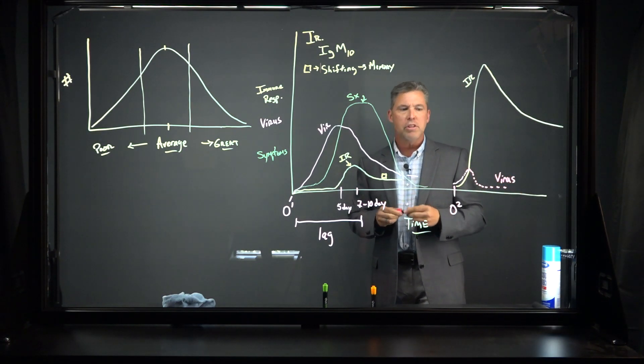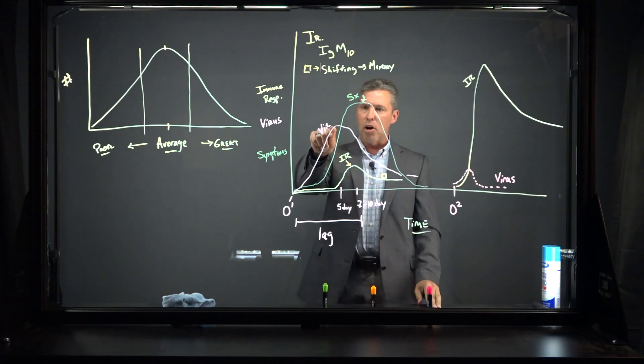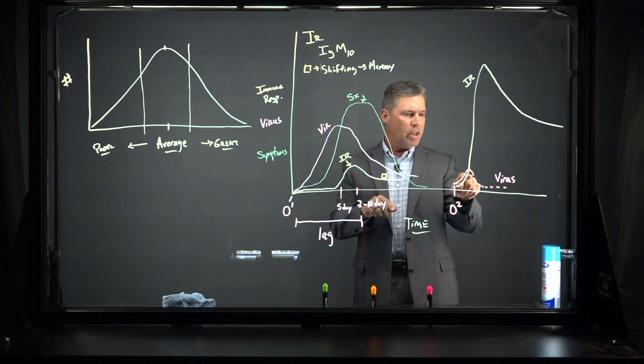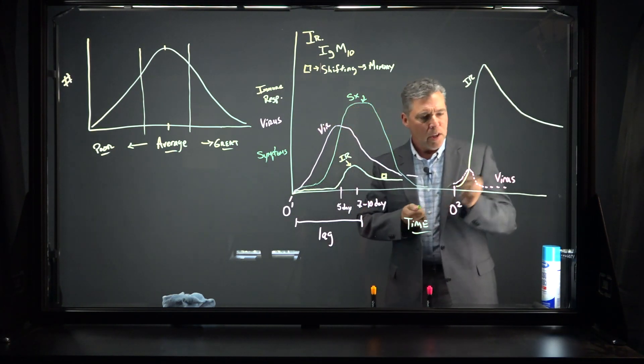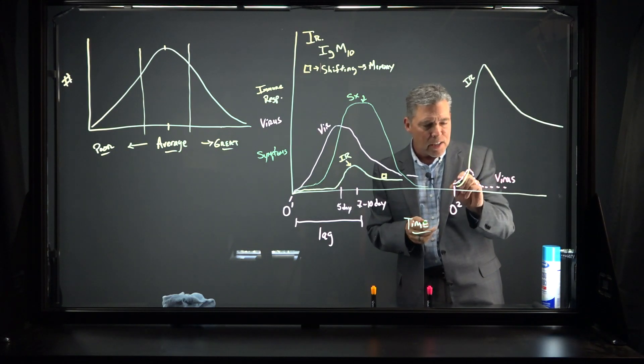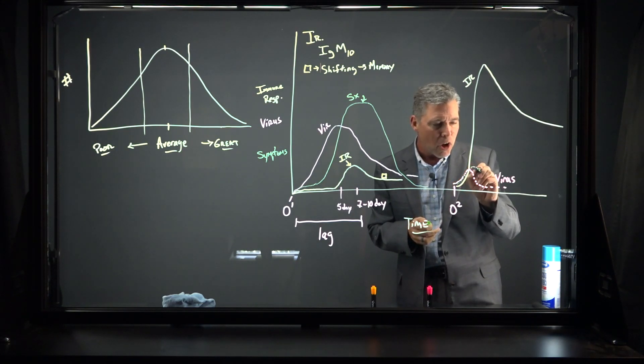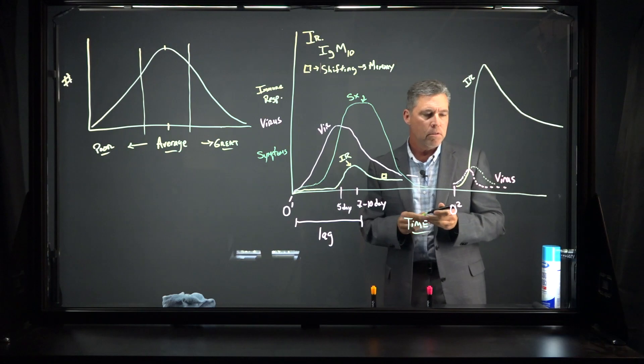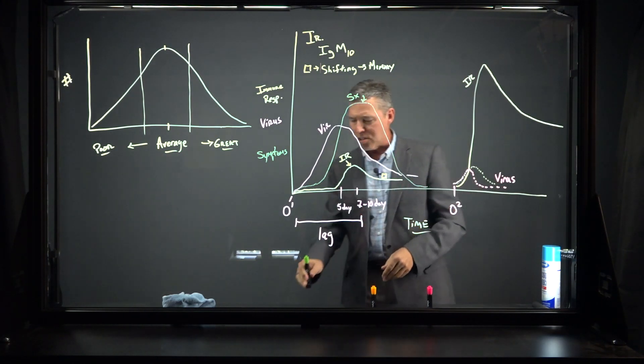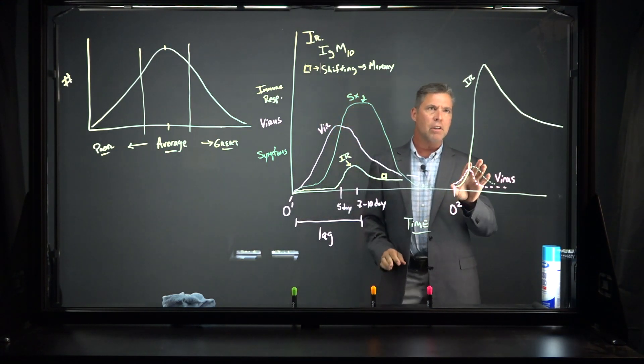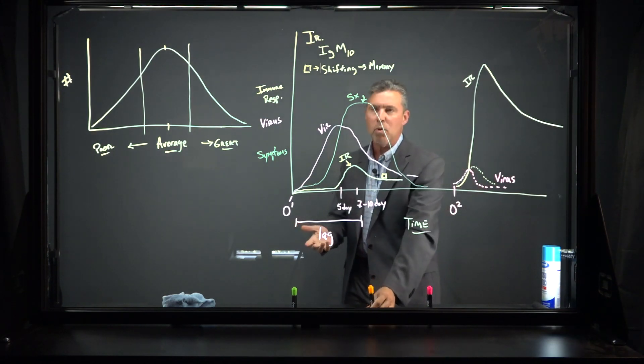Correspondingly, the viral load goes like this. This is virus. Notice the difference. Here, you've got a large viral load in symptoms. Here, you have very little viral load. And what we're seeing in the data is that the symptoms, if they exist at all, are like this. They lag behind the virus just slightly, but they're significantly lower than what you see before. So what's the difference?